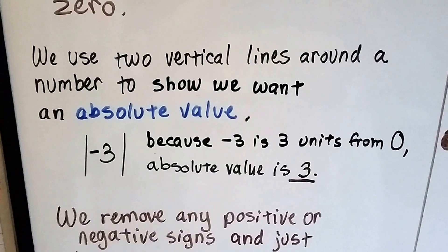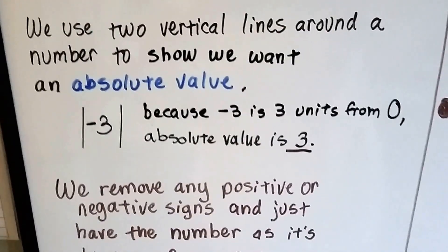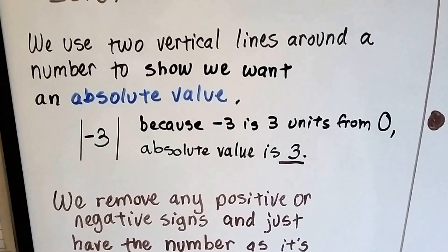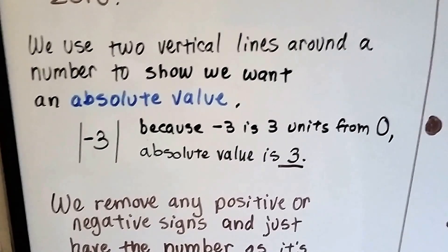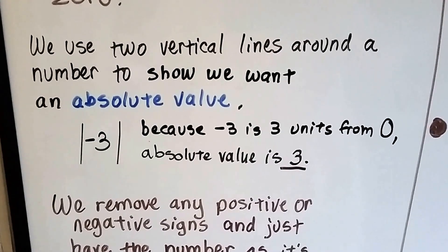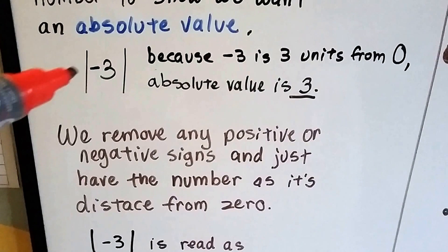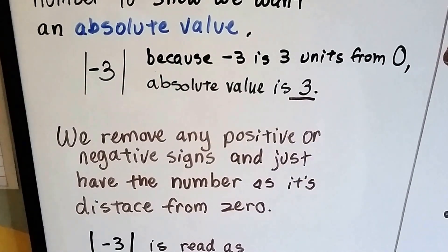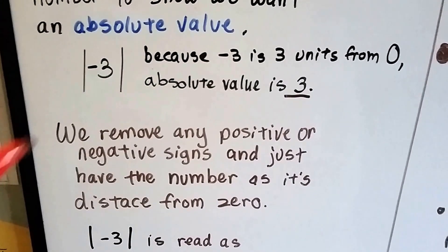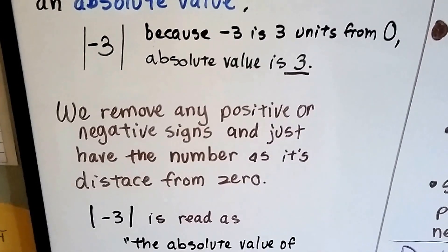We use two vertical lines around a number to show we want an absolute value. So this negative 3 has these two vertical lines around it, and because negative 3 is three units — three spaces away from zero — the absolute value is 3. We remove any positive or negative signs and just have the number as its distance from zero. It's three spaces from zero, so the absolute value is 3.